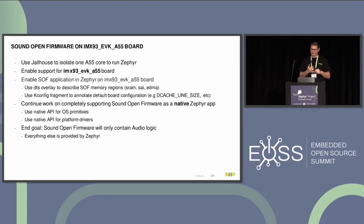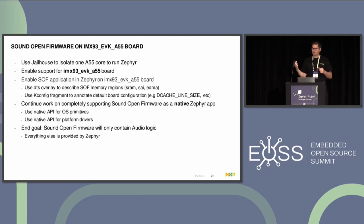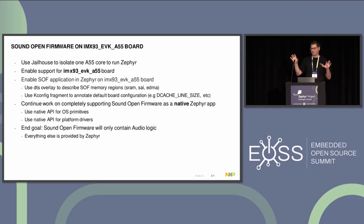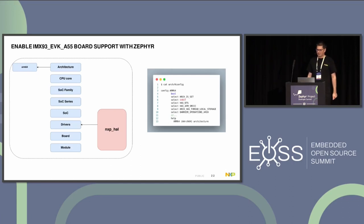The example we are working on is already upstream — support for the i.MX 93 EVK A55 board. In order to support Sound Open Firmware as an application, we first created a board, then created an application with custom overlays and Kconfig fragments, and added this application on top of existing boards. There is a very useful guide on how to add support for a new board.